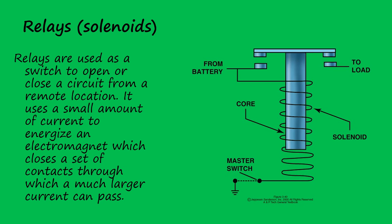Relays are one area in aviation where an electromagnet is utilized. In a relay such as the one depicted here, the contacts are spring-loaded to the open position. Once a current is applied to the coil, the core is magnetized, pulling the contacts closed. Stop the current flow and the contacts spring back open.